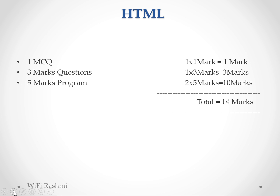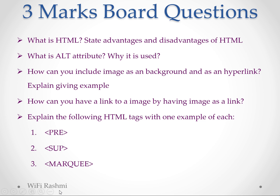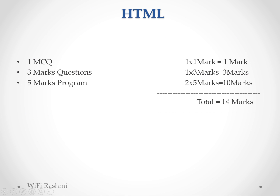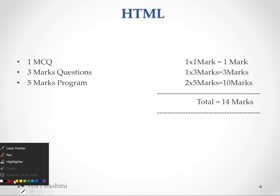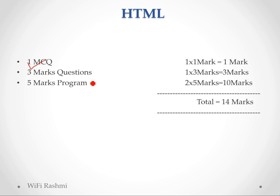HTML content: what is MCQ for one mark. For three marks, one question is most probably on tags — here are anchor tag, image tag, or three tags. For five marks, there are two programs: C++ for 20 marks, and parallel you are having two programs of HTML.